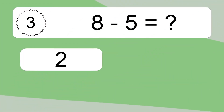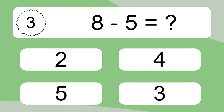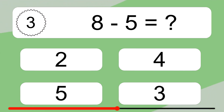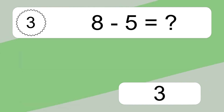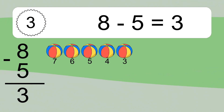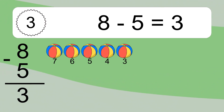8 minus 5 equals what? 8 minus 5 equals 3. Let's count it. 7, 6, 5, 4, 3.